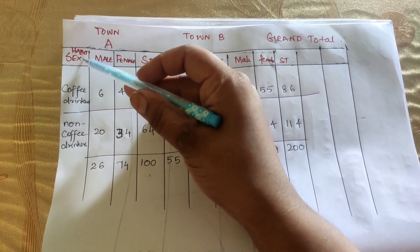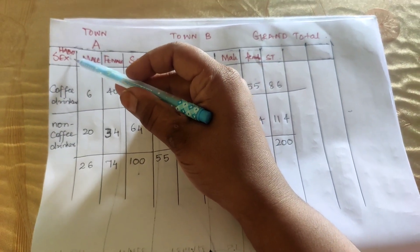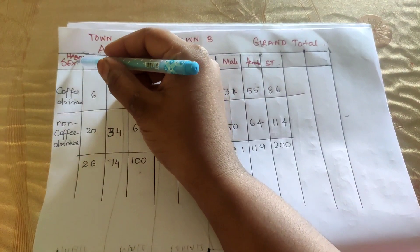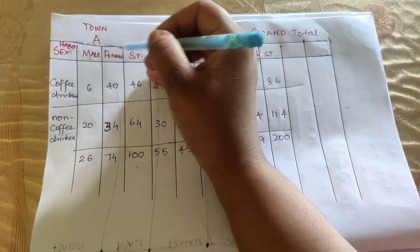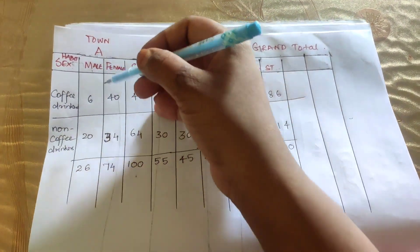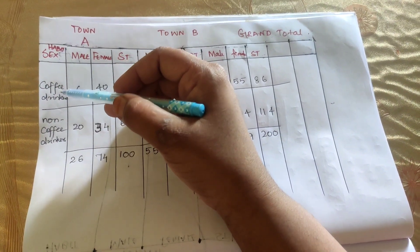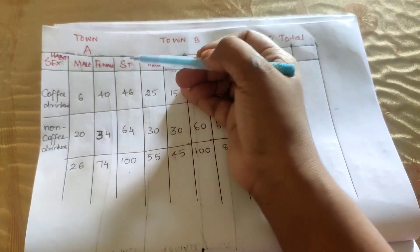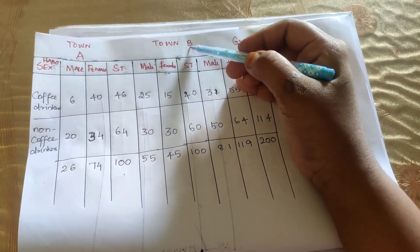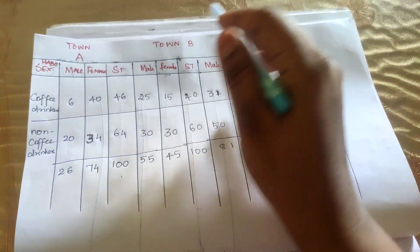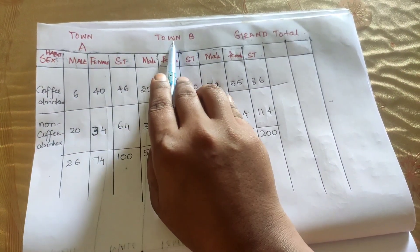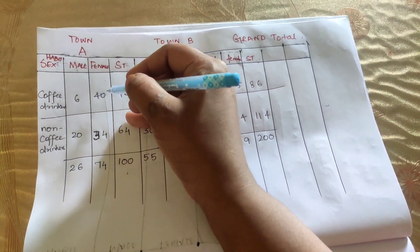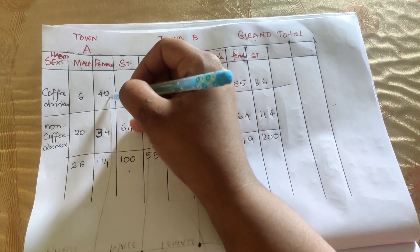The table is organized by sex and habit. We have coffee drinkers and non-coffee drinkers as columns, with male, female, and subtotal rows. This is for Town A, Town B, and a grand total which is the sum of Town A and Town B values. In Town A, female coffee drinkers are 40.